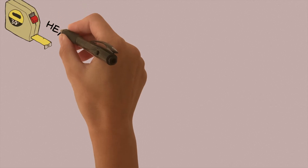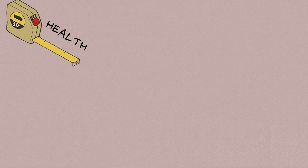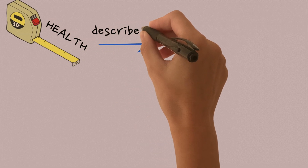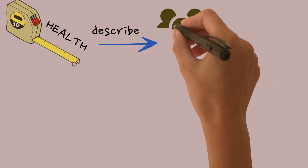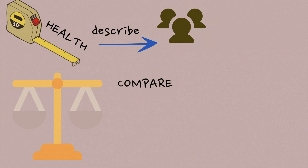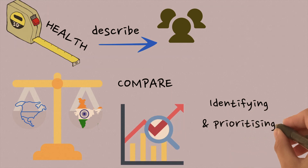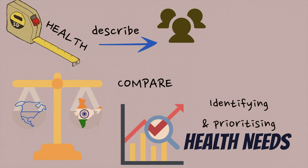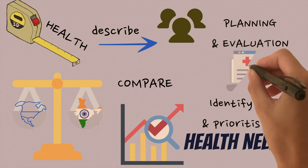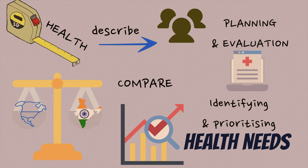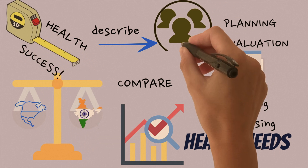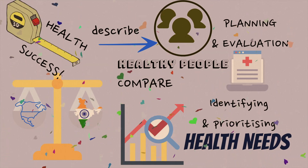Let us first talk about the uses of health indicators. Health indicators are used to measure and describe the health of the community, to compare health of different communities, to identify and prioritize their health needs, for planning and evaluation of health services, and to measure the success of actions taken to improve the health of the community.